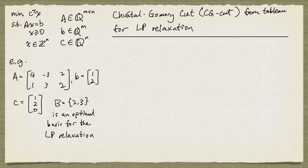The example we'll look at will have A equals [4, -3, 2; 1, 3, 2], b is [1, 2], and c is [1, 2, 0]. We're given that B equals {2, 3} is an optimal basis for the LP relaxation.